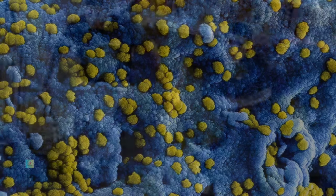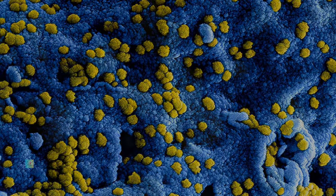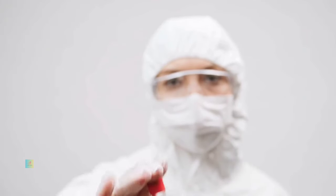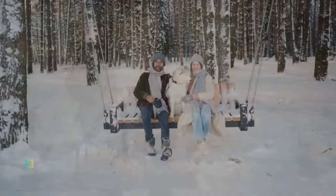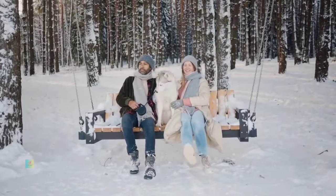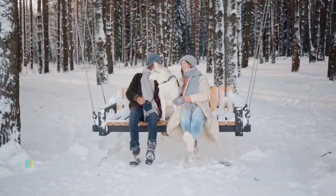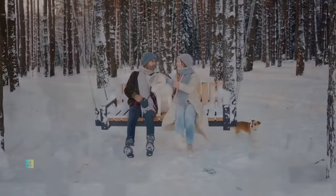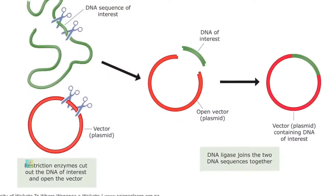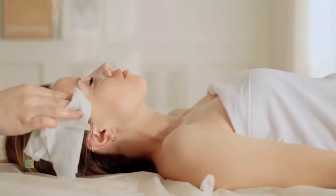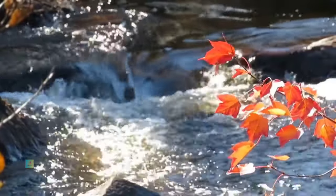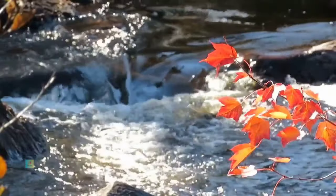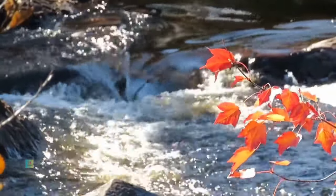Binary fission is the primary mode of reproduction. The cornerstone of bacterial formation lies in their ability to reproduce, and the most prevalent method is binary fission. This asexual process allows a single bacterial cell to give rise to two identical daughter cells. The steps of binary fission include DNA replication, elongation of the cell, and subsequent division into two genetically identical progeny. This rapid and efficient method enables bacteria to multiply exponentially under favorable conditions.